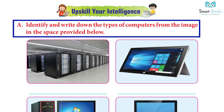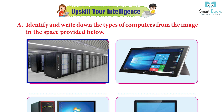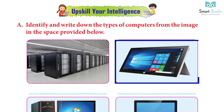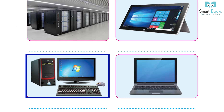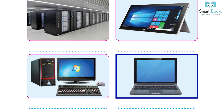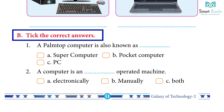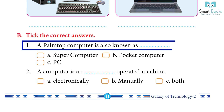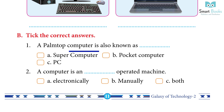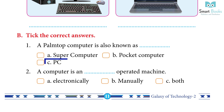Upscale your intelligence. Activity A: identify and write down the types of computers from the image — supercomputer, tablet computer, desktop computer, laptop computer. Activity B — tick the correct answers. Question 1: a palmtop computer is also known as — a) supercomputer, b) pocket computer, c) PC. Answer: b) pocket computer.